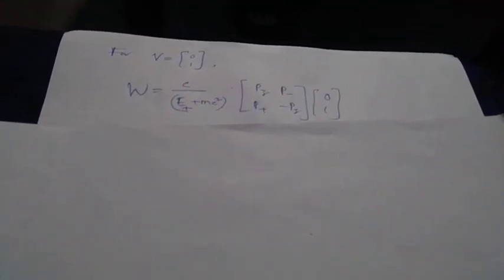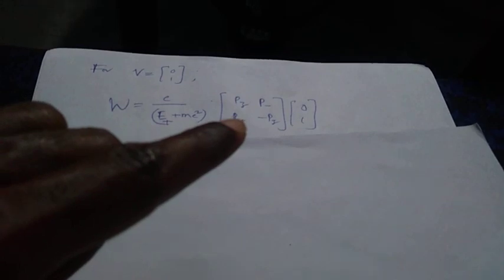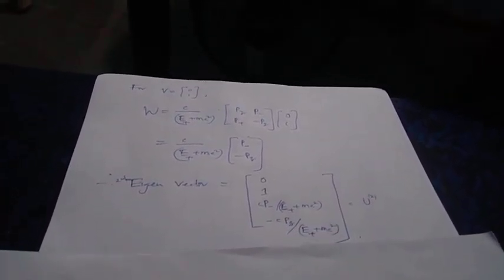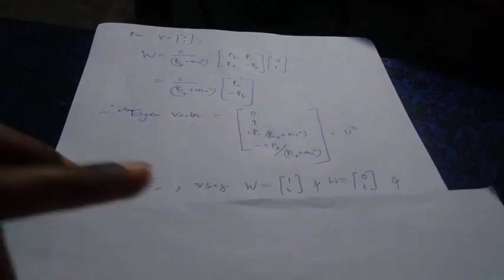Still using equation 4b for V = (0, 1), we write W as c/(E+ + mc²) times σ·P operating on (0, 1). Performing the matrix multiplication, W equals c/(E+ + mc²) times the column matrix (P-, -P_z). So the second eigenvector U² has V = (0, 1) and W equal to this quantity.